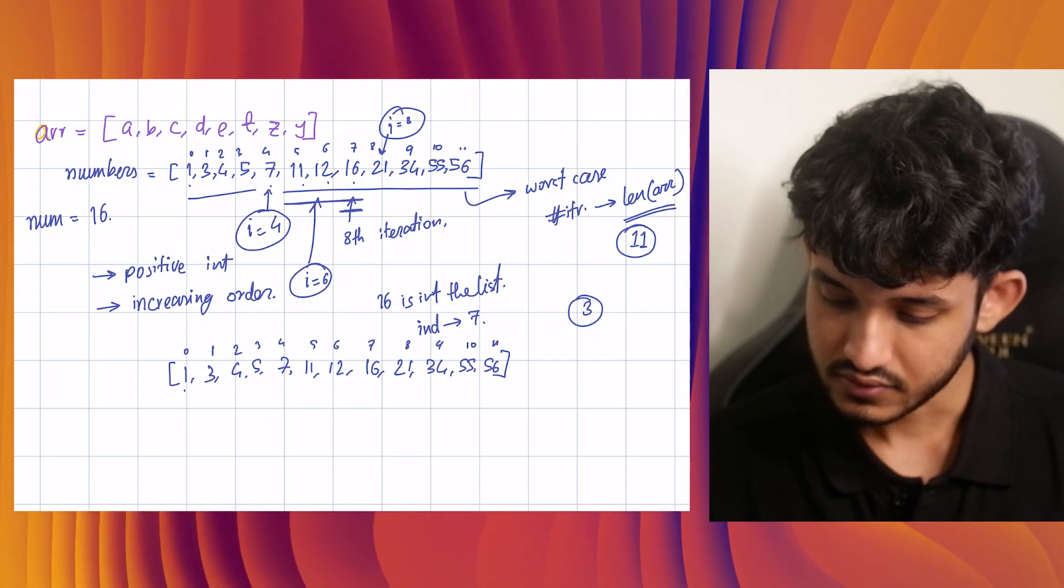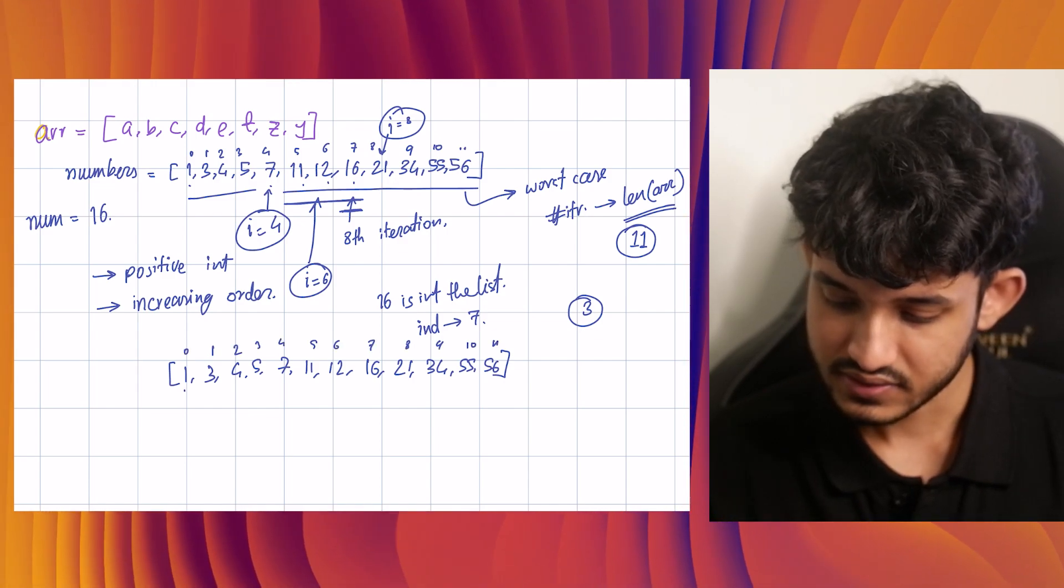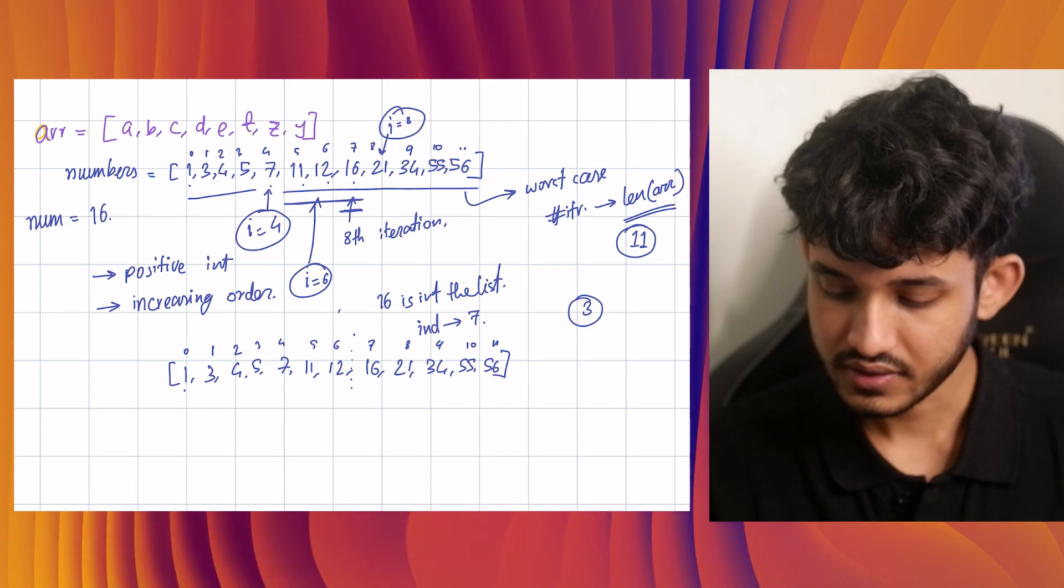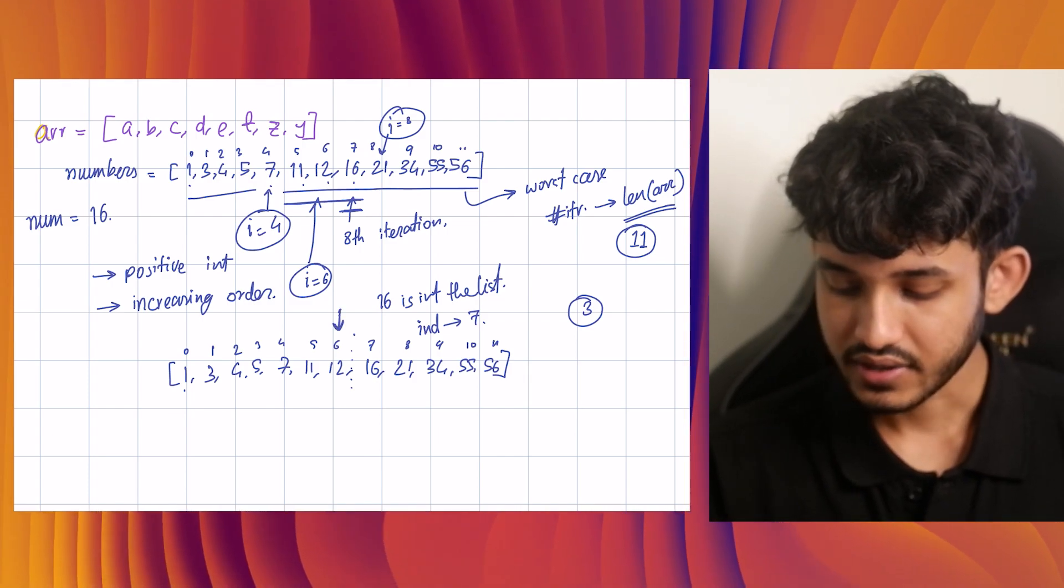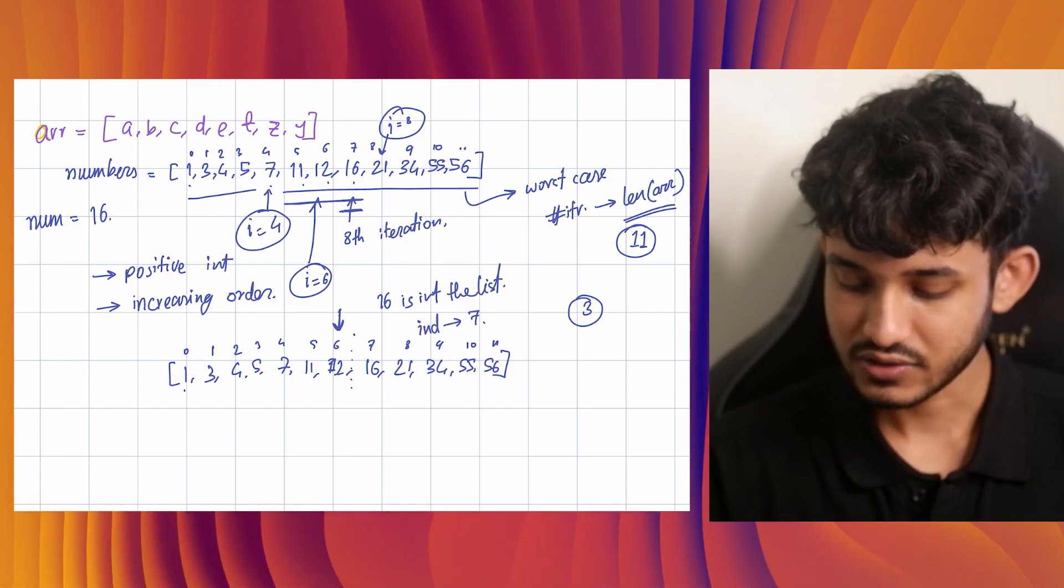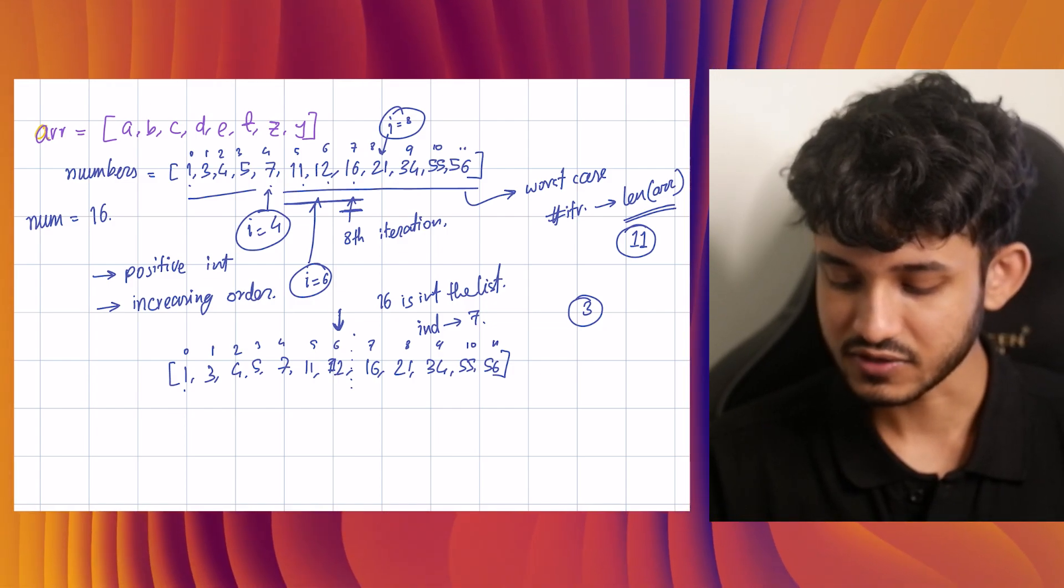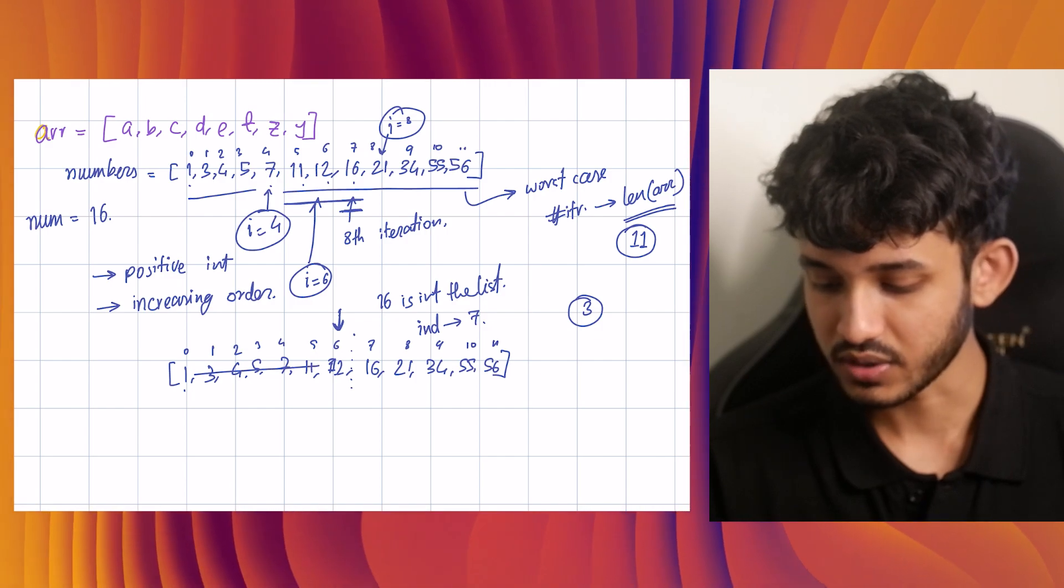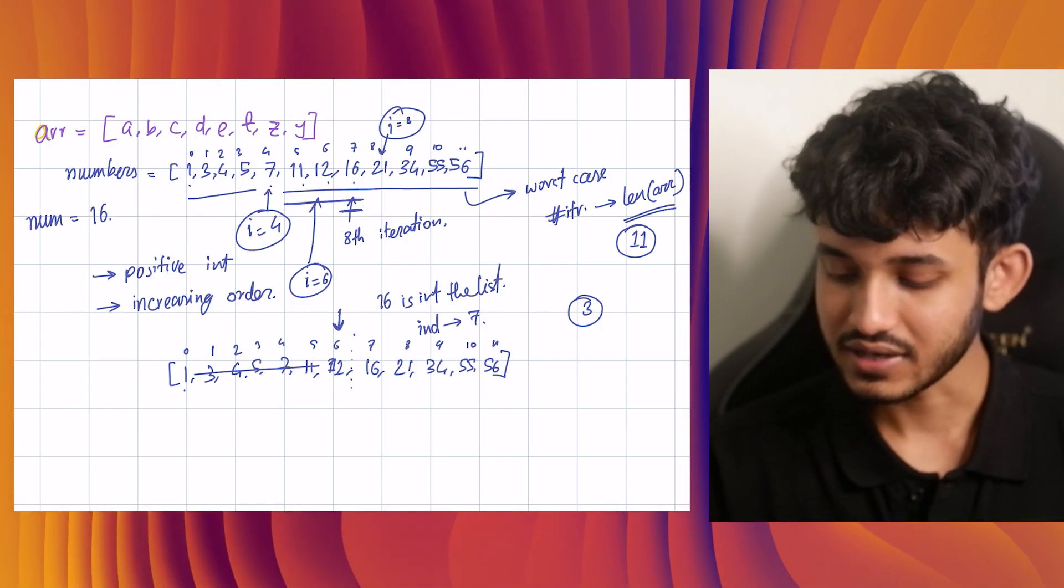We take the middle element and see, okay, is it greater or less? It is greater. So we just get rid of this part. We do not need to worry about that. Our area of concern lies here. Now we take again the middle element. We see if it's greater or less. 16 is less. So we get rid of this.